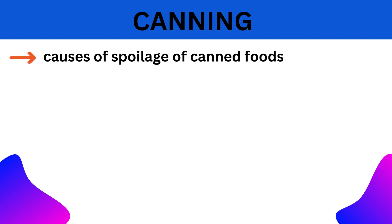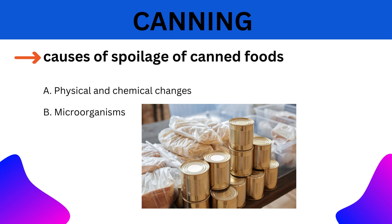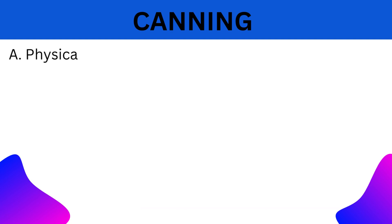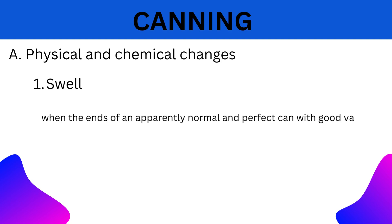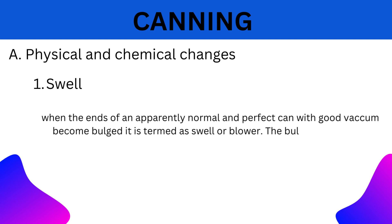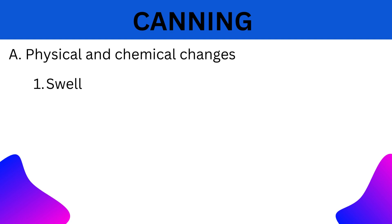Spoilage of canned products may be due to two reasons: physical and chemical changes, and microorganisms. A. Spoilage due to physical and chemical changes. 1. Swell: When the ends of an apparently normal and perfect can with a good vacuum become bulged, it is termed as swell or blower. The bulge is due to the positive internal pressure of gases formed by microbial or chemical action.